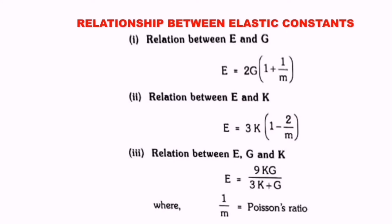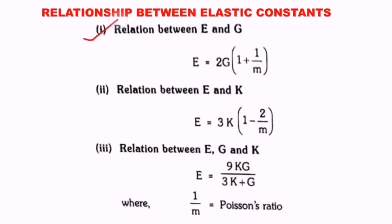Before going to solve the problems, let's look at the relationship between the three elastic constants. They are denoted with E, C or G, and K. E is Young's modulus, C and G is for modulus of rigidity, and K is for bulk modulus. The first relation is the relation between E and G. G is modulus of rigidity and E is modulus of elasticity. So E equals to 2G(1 + 1/M). G is also denoted with C — both are the same.